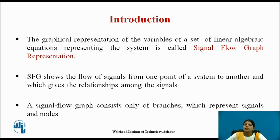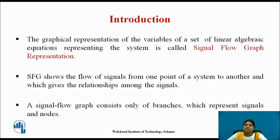The graphical representation of the variables of a set of linear algebraic equations representing the system is called signal flow graph representation. Signal flow graph shows the flow of signals from one point of a system to another point, and gives the relationships among the signals. It consists only of branches and nodes, which represent signals.